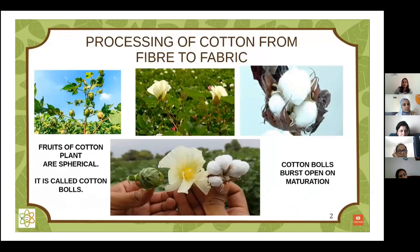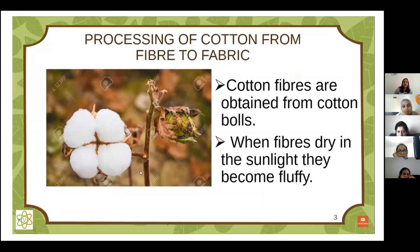This is a fruit of cotton — called cotton bolls. This is a flower, and when it bursts we get cotton from it. From cotton fibers, we obtain them from cotton bolls. What is the difference between 'bolls' (B-O-L-L-S) and 'balls' (B-A-L-L-S)?